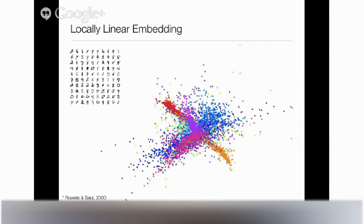Another method is locally linear embedding, which produces this plot on the MNIST dataset. Locally linear embedding is similar to T-SNE in that it really tries to preserve small pairwise distances. But it has a problem where it likes to collapse all points onto the origin, and then uses outliers to satisfy a simple covariance constraint. Typically what you see is a whole bunch of points collapsed, and then a few strings flying out to satisfy that covariance constraint.